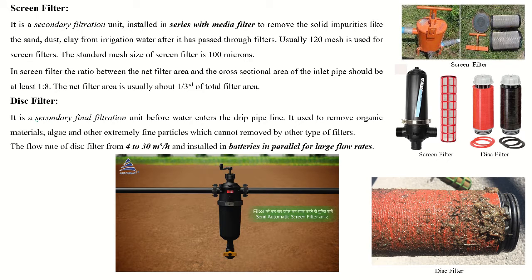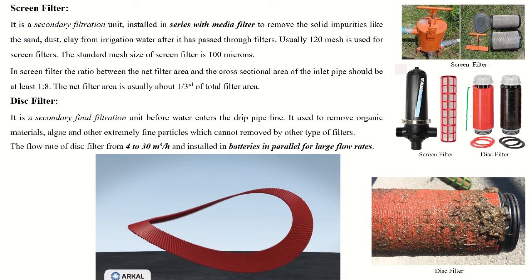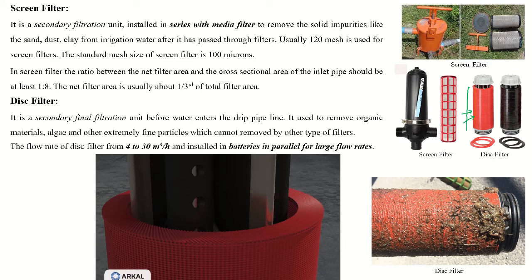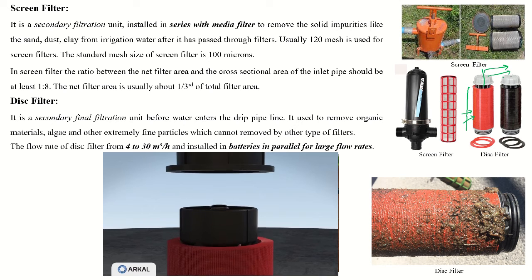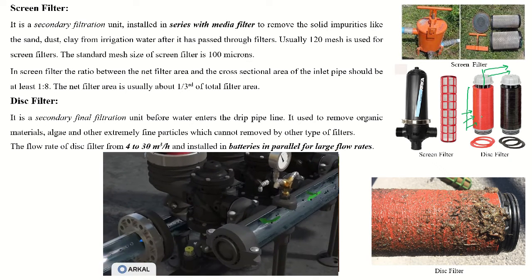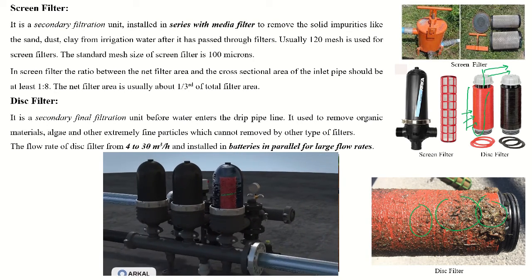The next one is the disc filter, also a secondary filtration unit. It is used before water enters the dripline to remove organic material, algae, and other extremely fine particles that cannot be removed by the screen filter, sand filter, or hydrocyclone filter. The flow rate of the disc filter varies from 4 to 30 cubic meters per hour, and this type of disc filter is arranged in parallel for large flow systems. Circular-shaped discs are arranged throughout the length of the filtration unit. Water enters and the disc filters out algae and unwanted material, allowing only fresh water inside the tube to go to the main or sub-main system.